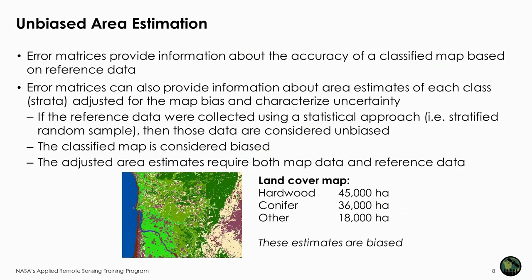Last week, we discussed how error matrices provide information about the accuracy of a land cover classification based on reference data collected through sample-based approaches. This week, we will discuss how error matrices can also provide information about the estimated area of each class, adjusted for the map bias, and also characterize uncertainty of those estimates. The first thing to understand is that the land cover classified map is considered biased, so the areas of each land cover class are also considered biased. In the example, the hectares for each class in the land cover map are considered biased.